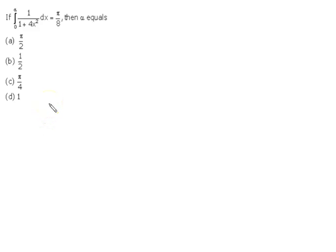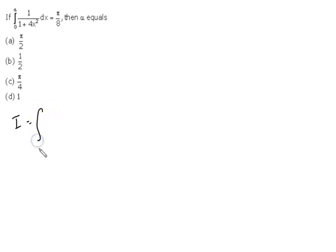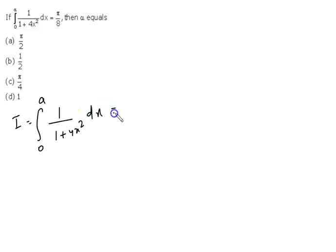Hello everyone, welcome to Benantu. Today I am going to discuss a very important question on integration. The problem is: I is equal to the limit from 0 to a of 1/(4 + x²) dx, which equals π/8. We have to find out the value of 'a'.